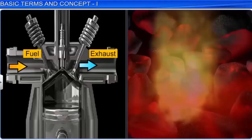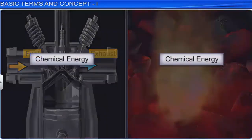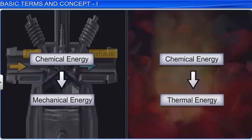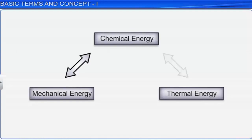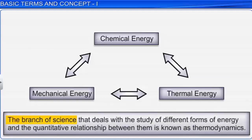In both examples, chemical energy — that is the energy stored in the bonds of atoms and molecules — is converted to other forms of energy. Thus, various forms of energy are interrelated, and under certain conditions, these may be transformed from one form to another. The branch of science that deals with the study of different forms of energy and the quantitative relationship between them is known as thermodynamics.